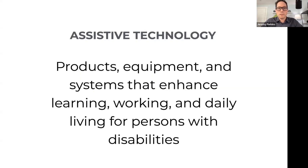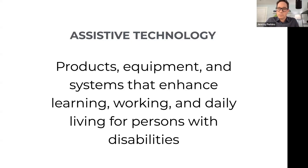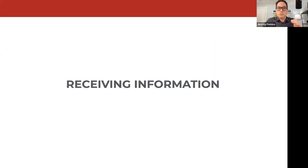Let's talk about how sites are accessed. One term you'll come across is assistive technology — a group of products, equipment, and systems that enhance learning, working, and daily living for persons with disabilities. There's a set of tools that people with a disability use to engage with websites. I'll break these into two groups: those that help us receive information, and those that help us input information.